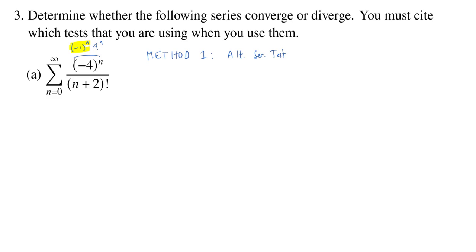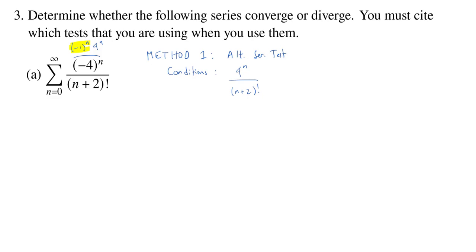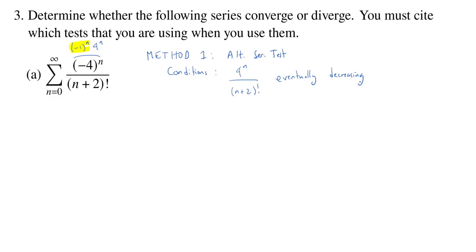To use the alternating series test, remember there are some conditions you have to actually check. The conditions are that the underlying sequence without the alternator — so if I look at 4 to the n over n plus 2 factorial — should be eventually decreasing. It's okay if it increases for a little bit or goes back and forth, but eventually this needs to be a decreasing sequence.